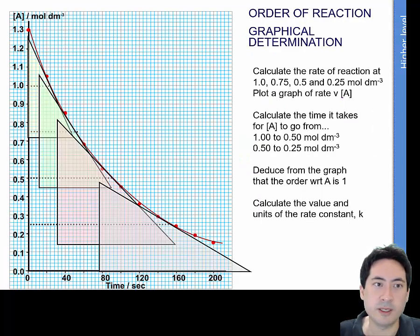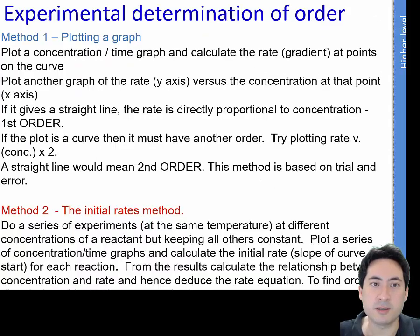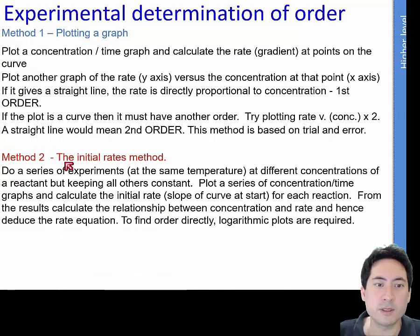So this is one way that you can get the rate as you get the change in concentration over time. You can take individual tangents. And so just a summary here. So you can either plot the concentration time graph and calculate the points on the curve, or you could do this one here.